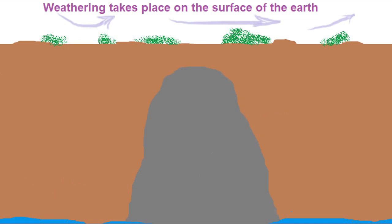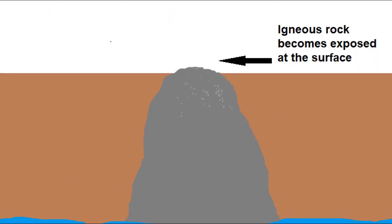We're going to have weathering that takes place on the surface of the earth. This is ongoing. We've got wind erosion, water erosion, all sorts of processes that can remove that top layer of soil until the igneous rock becomes exposed at the surface.